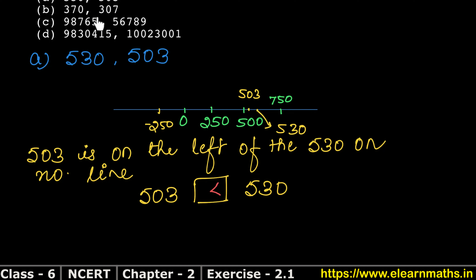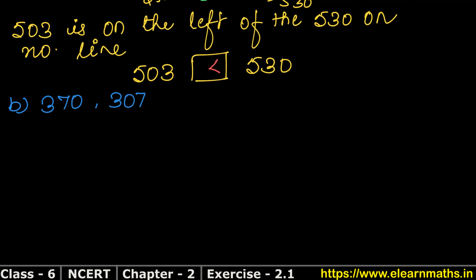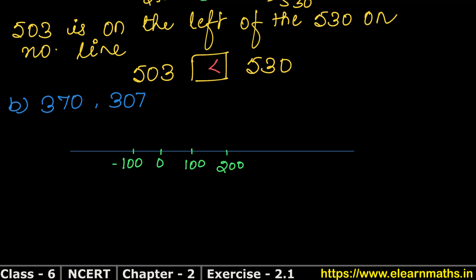Let's do the next part. Part B is 370 and 307. On the number line, we mark the negative side on the left and positive numbers on the right: 100, 200, 300, 400. Now we need to mark both numbers. Between 300 and 400, we place 370, and 307 is just after 300.